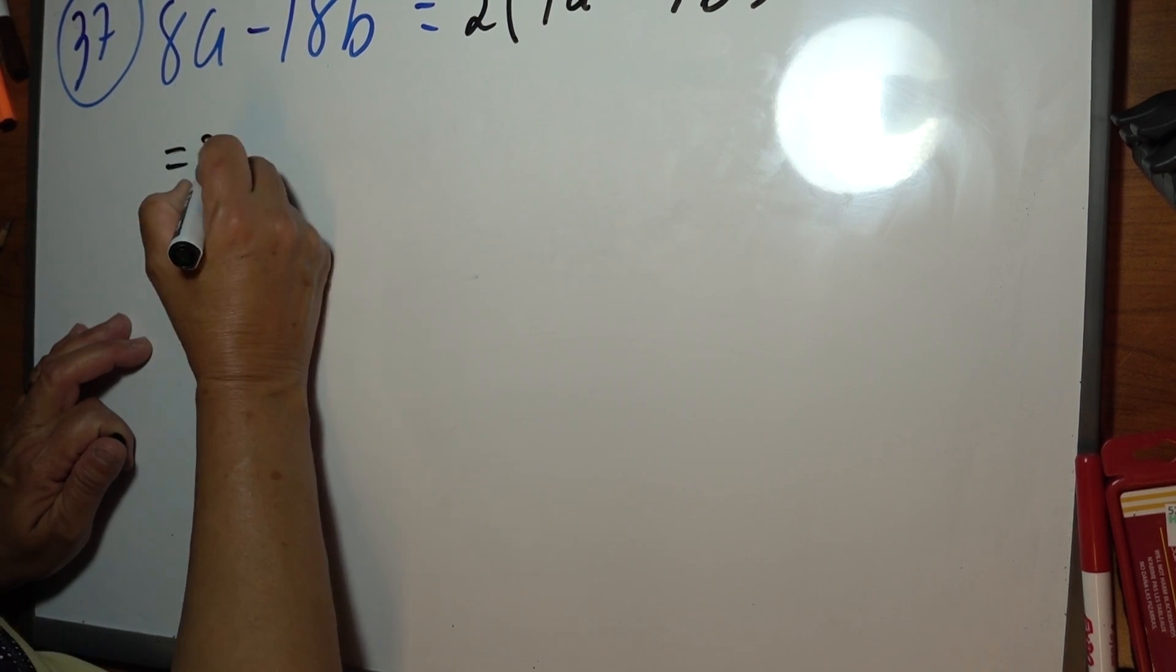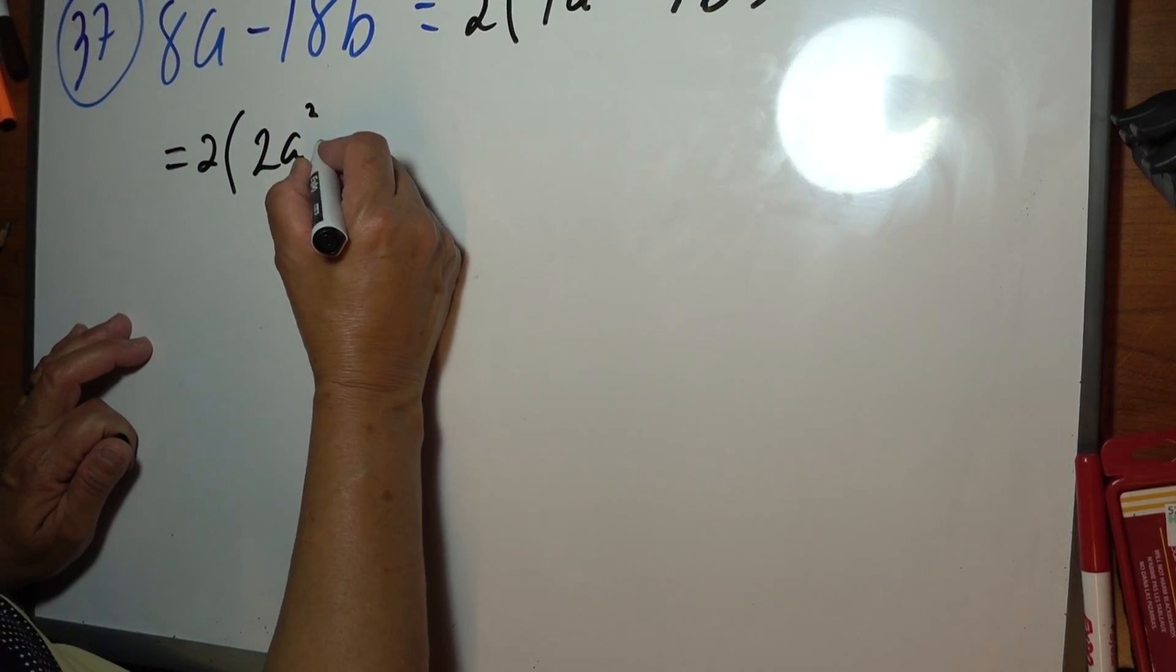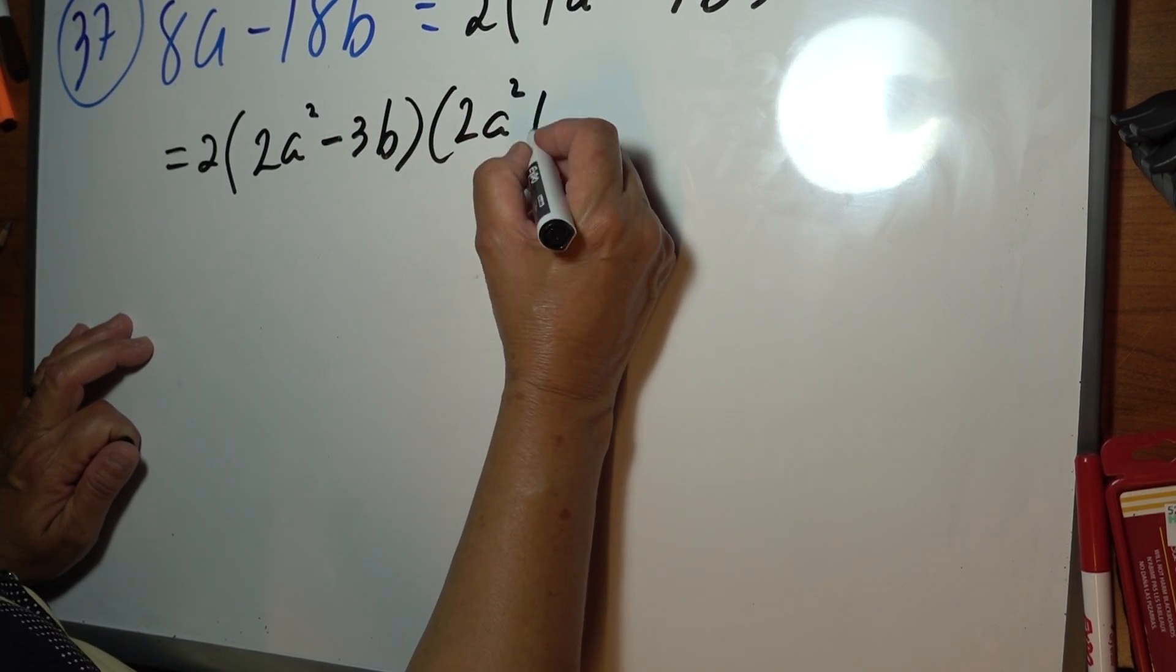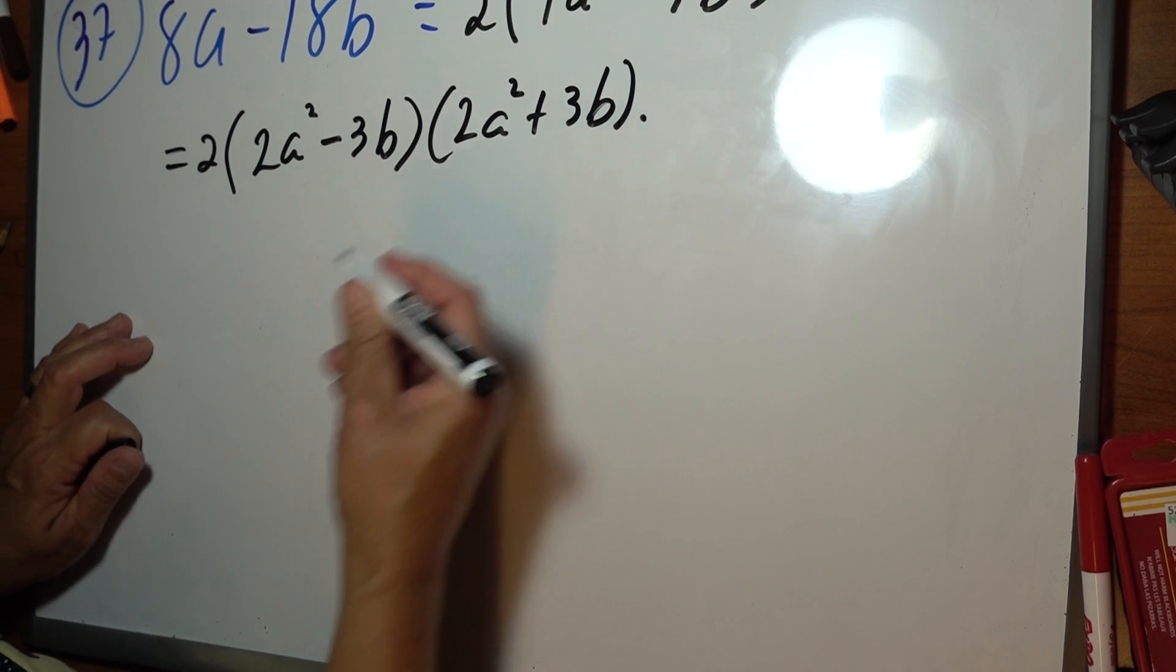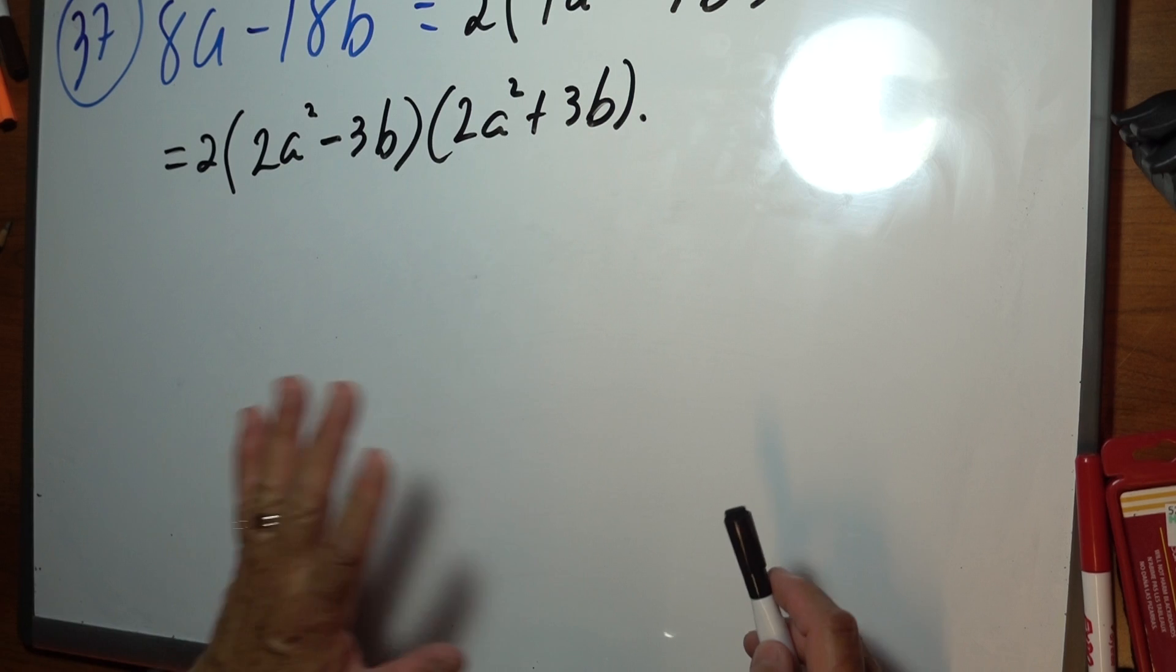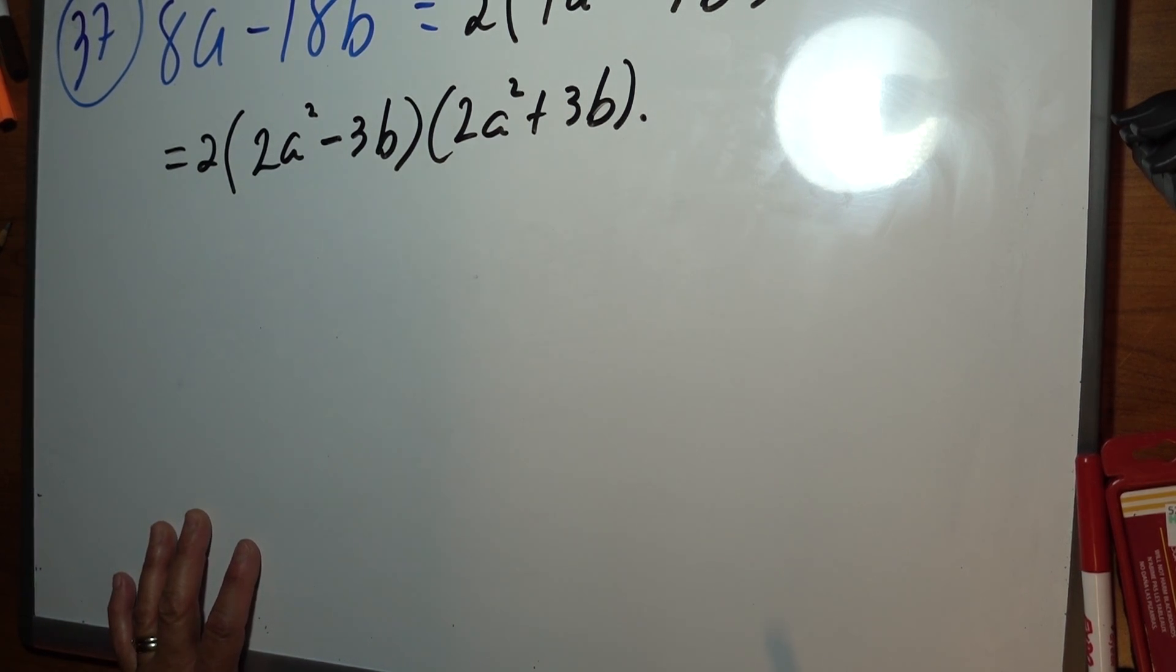and this is 2 times 2a squared minus 3b, 2a squared plus 3b. And those are the factors for this one. This one is not factorable, so we're done with problem number 37.